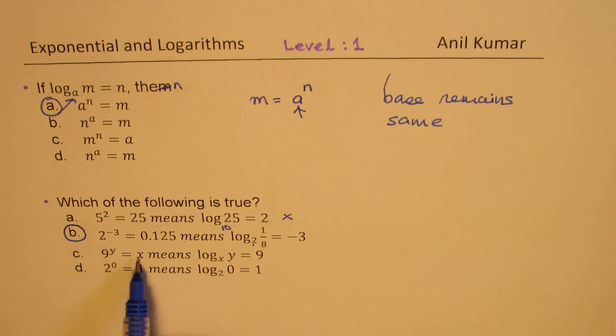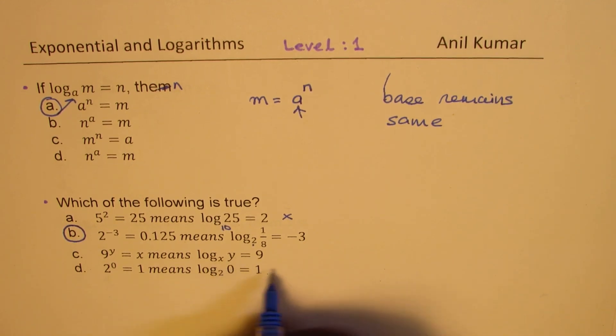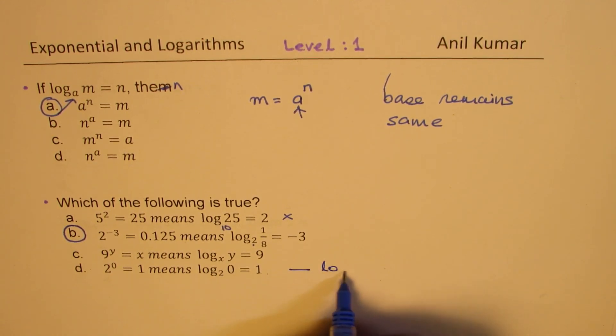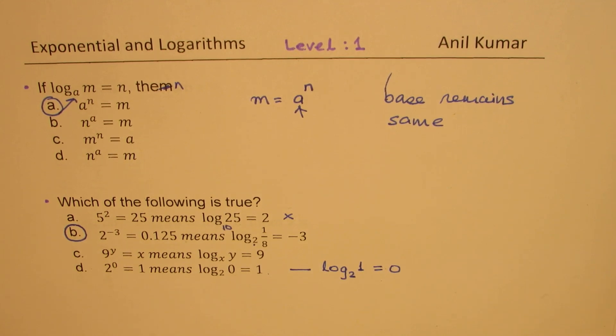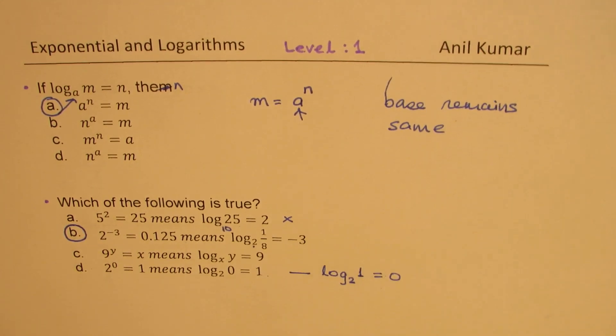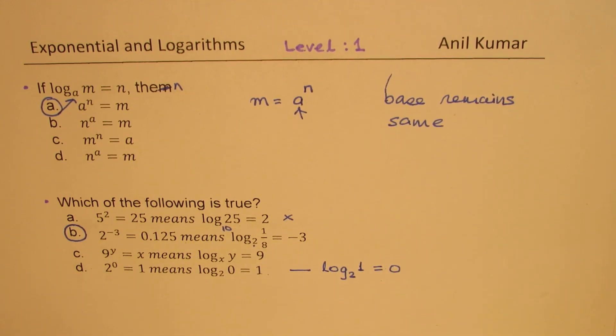Here we have 9y equals x. The base has been changed to x, not 9, so this is incorrect. Two to the power of zero equals 1 means log to the base 2 of 1 equals 0. The correct statement here should have been log to the base 2 of 1 is equal to 0. That is incorrect. So I hope this basic concept is clear. Now with that in mind, let's take more multiple choice questions on this topic.